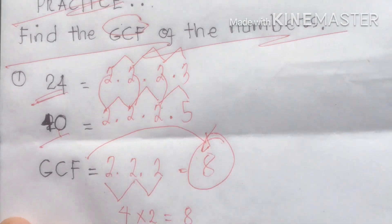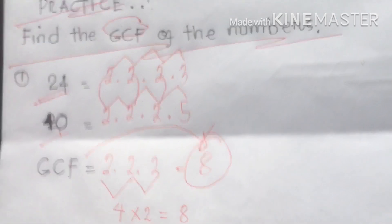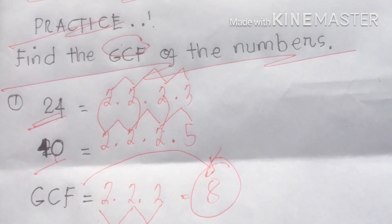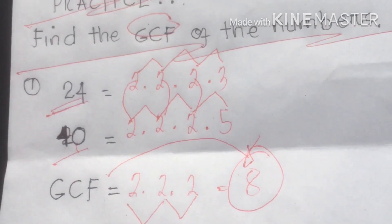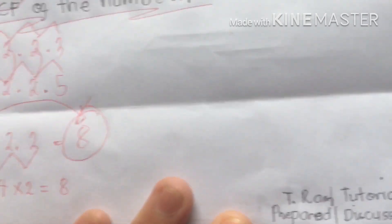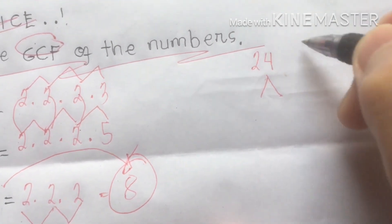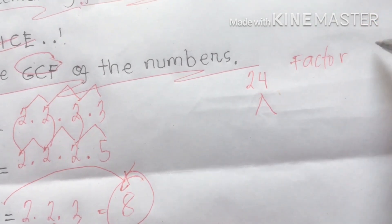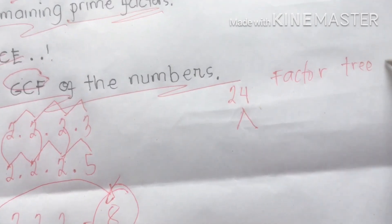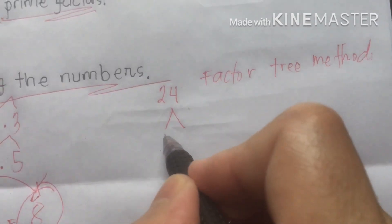8 is the Greatest Common Factor of 24 and 40. Did you understand? Let me also show you another method — the factor tree method. This is another way you can factor numbers like 24 and 40.